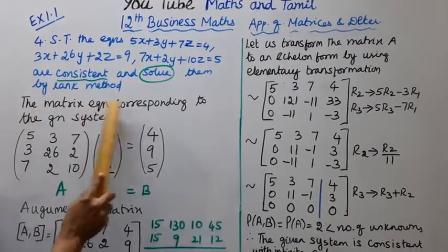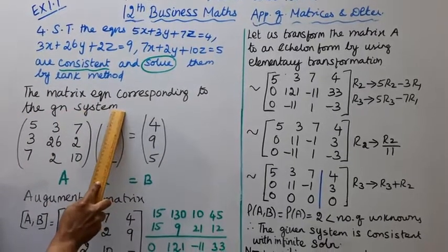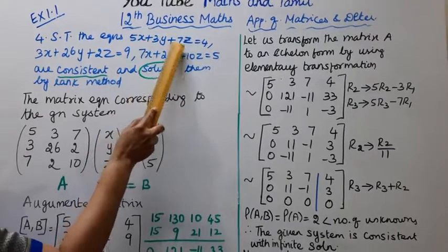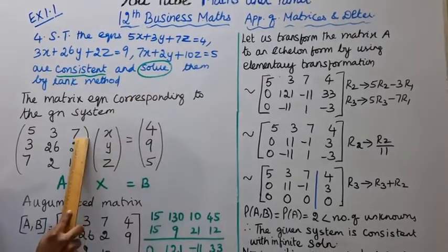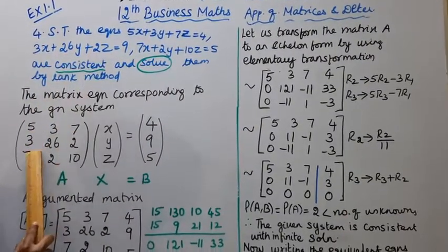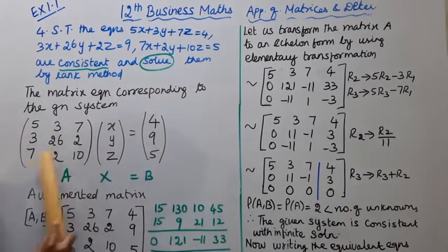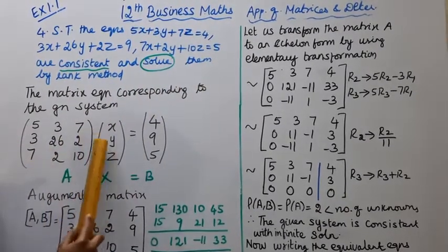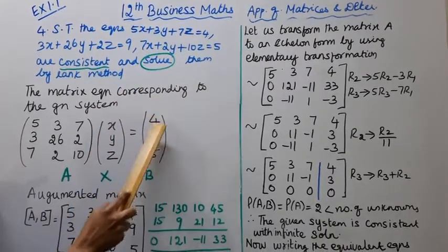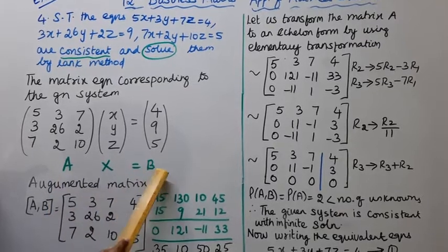The matrix equation corresponding to the given system is AX = B. The coefficient matrix A has entries: row 1 is 5, 3, 7; row 2 is 3, 26, 2; row 3 is 7, 2, 10. The right-hand side vector B is 4, 9, 5.